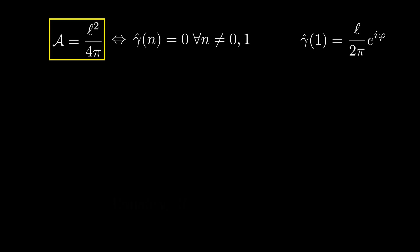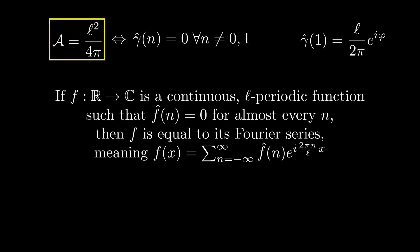Now we need to use another result from Fourier analysis to deduce that gamma is a circle. If almost all Fourier coefficients, meaning all but a finite number, of a continuous l-periodic function vanish, then f is equal to its Fourier series.